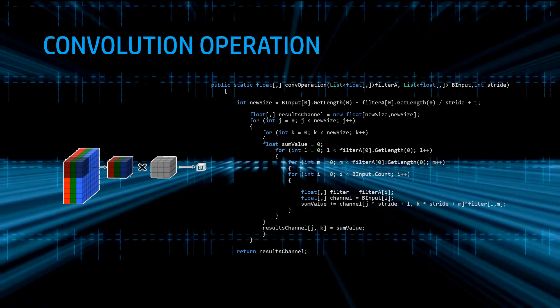In the code when we apply the convolutional operation, it will have 5 loops. Each loop will have the corresponding notation. When we calculate the size of the new image, we iterate through all the image depending on the stride, padding, filter, and input. We do the multiplication of each position and sum all of them up, then store the result in the new array value that we return.